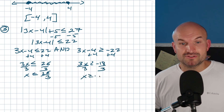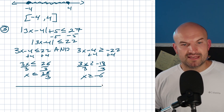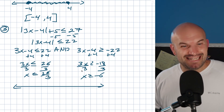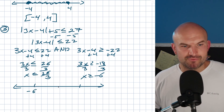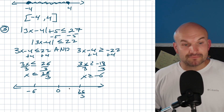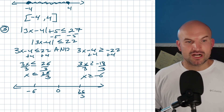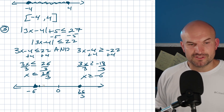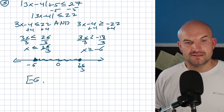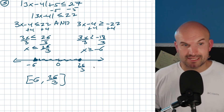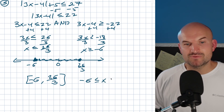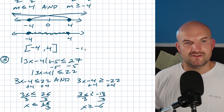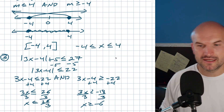Dividing by three: x is less than or equal to 26 over 3 and x is greater than or equal to negative 6. Since 26 over 3 is roughly 8 and two-thirds, the number line shows negative 6 and 8⅔. For interval notation: negative 6 to 26 over 3 with brackets. As a compound inequality: negative 6 ≤ x ≤ 26/3. The previous example can be similarly written as negative 4 ≤ x ≤ 4.